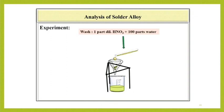Wash this precipitate by using 1 part dilute HNO3 plus 100 parts of water. Give 3 to 4 such washings and keep the filtrate and washing for the determination of lead.